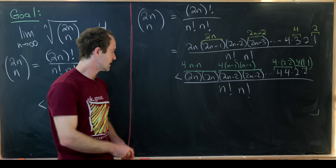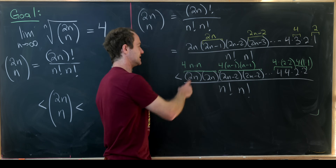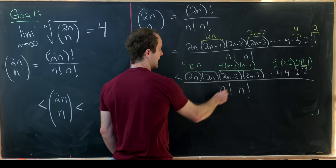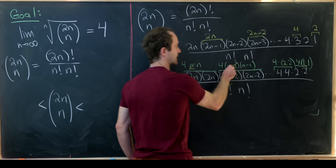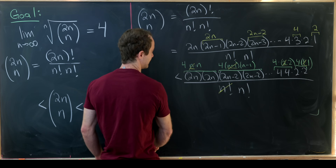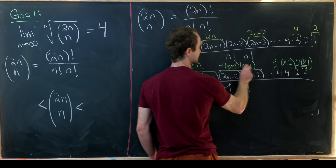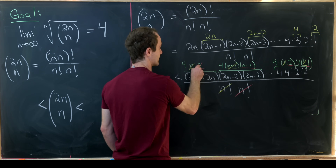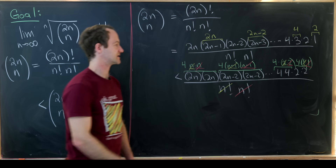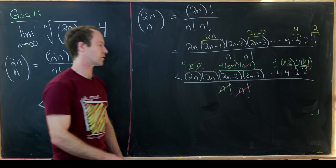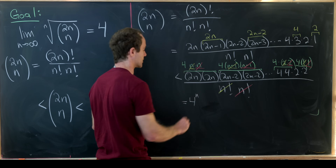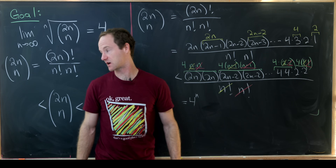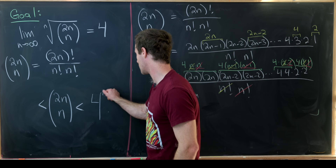Now we can group these: the first copy of n, n minus 1, down to 2 and 1 cancels with one n factorial in the denominator. The second copy of n, n minus 1, down to 2 and 1 cancels with the other n factorial. What we're left with is n fours in the numerator, so this equals 4 to the n. That means 4 to the n is an upper bound for our central binomial coefficient.